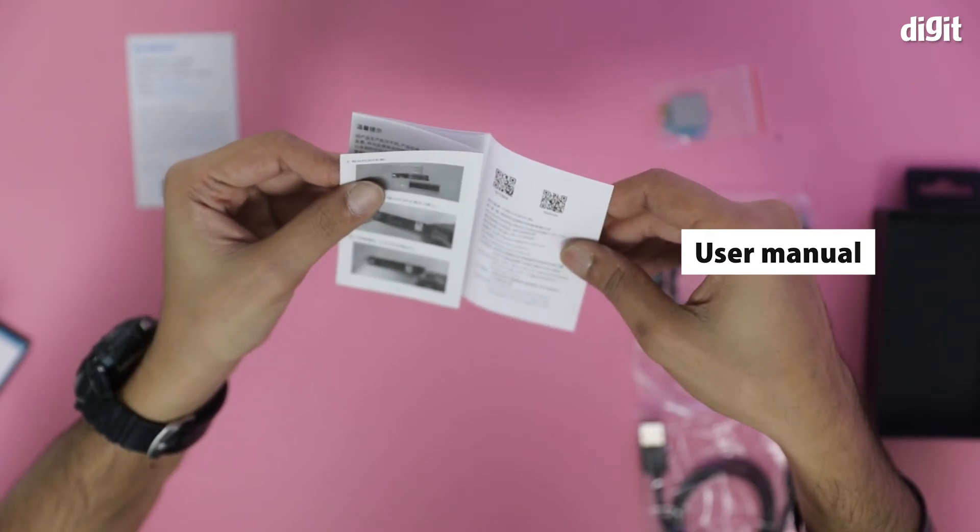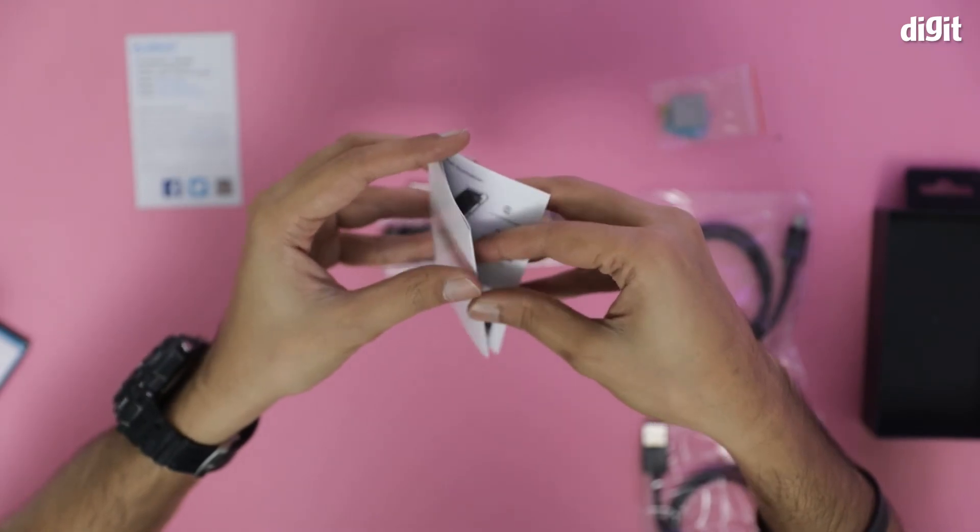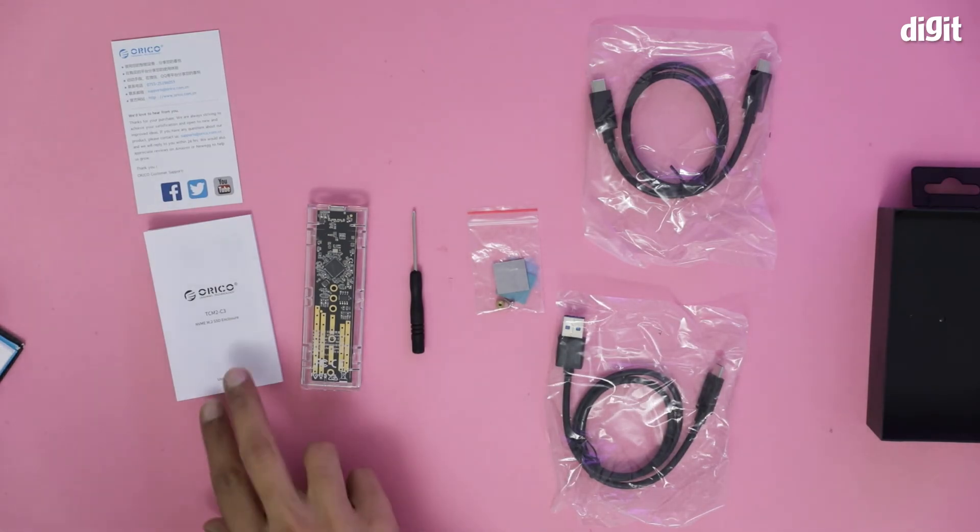So that's about it. You read this once and you will know what you need to do in order to set this particular device up. This is it. This is what you will find inside the box containing the Orico NVMe M2 SSD enclosure. Thank you for watching.